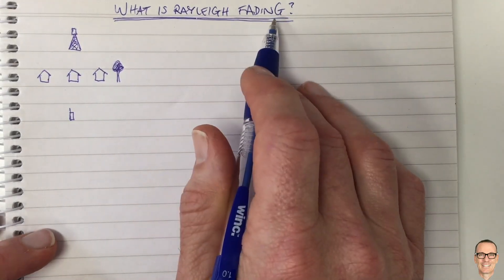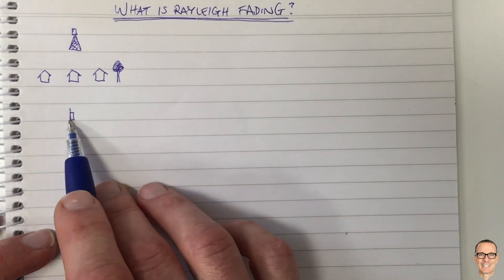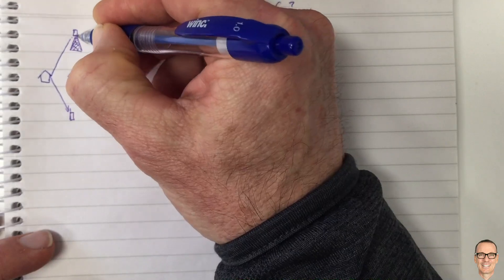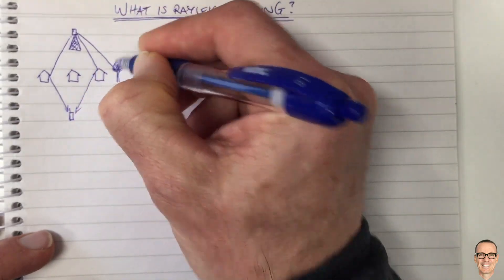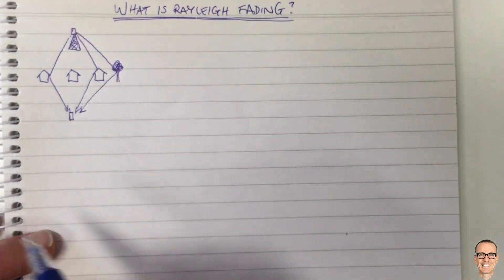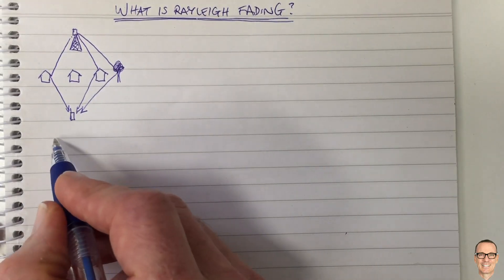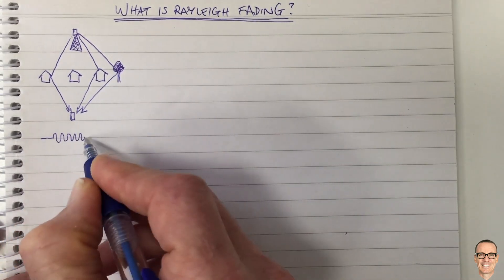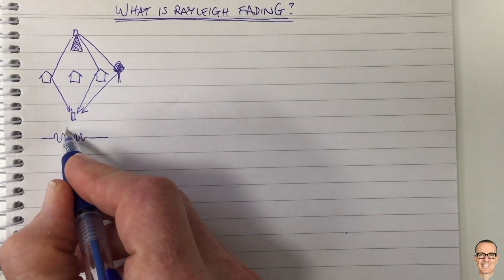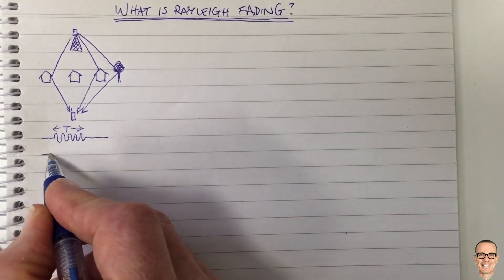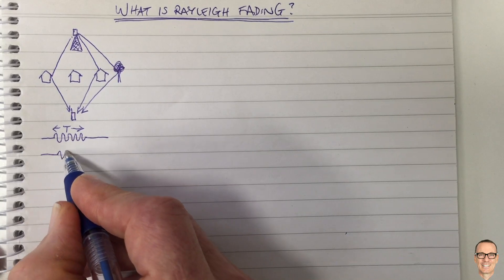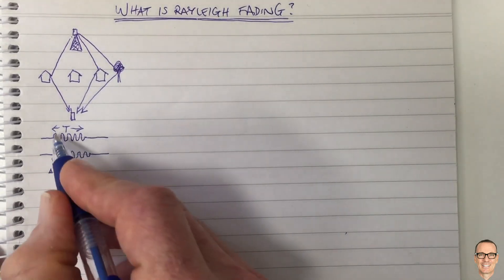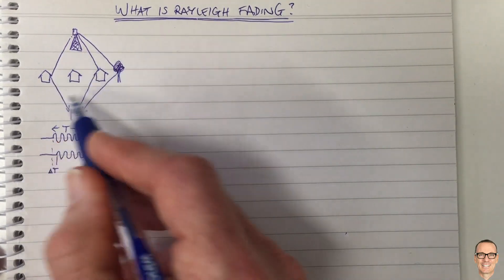What is Rayleigh fading? Here's a picture of a base station, some houses, trees, and a receiver. In a situation where there are multiple paths bouncing off houses and trees with no direct path, we're going to have at our receiver lots of versions of the signal arriving with different delays. If we had one sinusoid or symbol being sent over a period T, the next path would arrive with a delay. If that delay delta T is small compared to the symbol time, we receive all the energy from both paths within our received symbol.